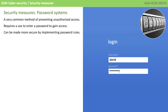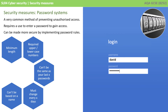The second security measure is password systems. A very common method of preventing unauthorised access is to require users of a system to enter a username and password, and this can be made more secure by implementing various password rules. For example, one policy on a network may be that passwords have to be a minimum length, that passwords have to have a mix of uppercase and lowercase numbers, that your password can't be the same as your last five passwords used, that you must change your password every 30 days, and that your password shouldn't be based on a real life name.